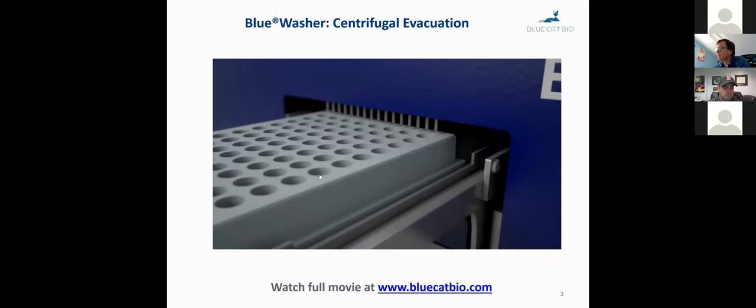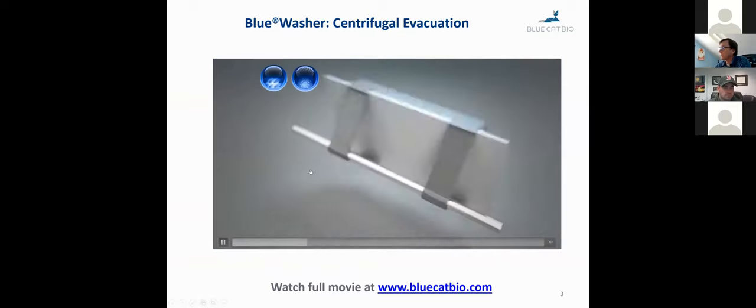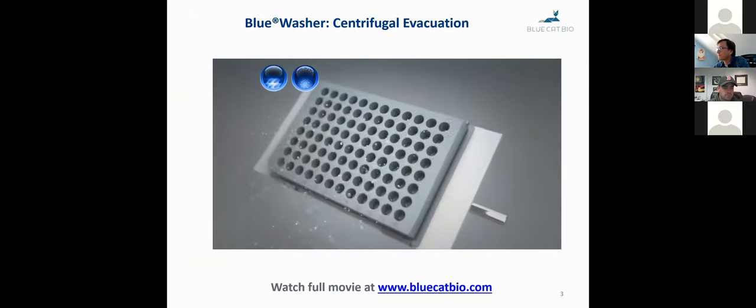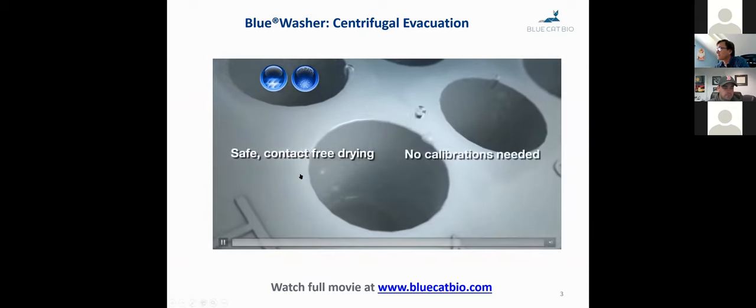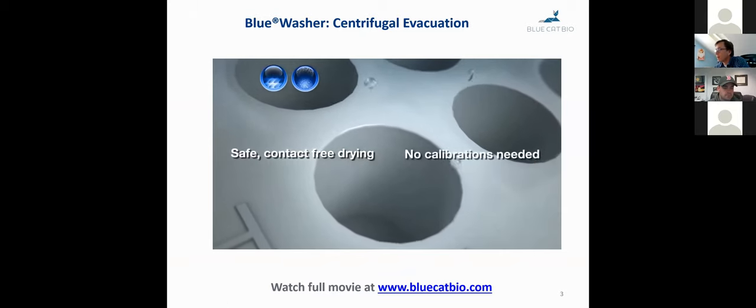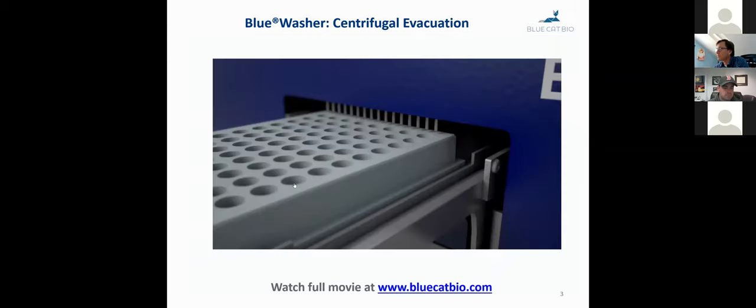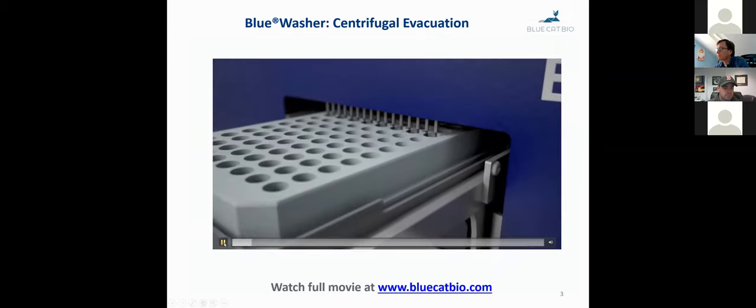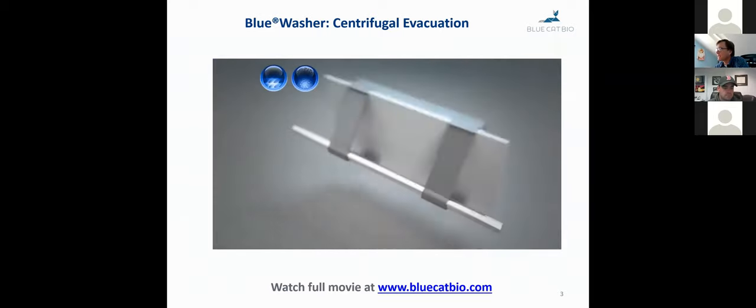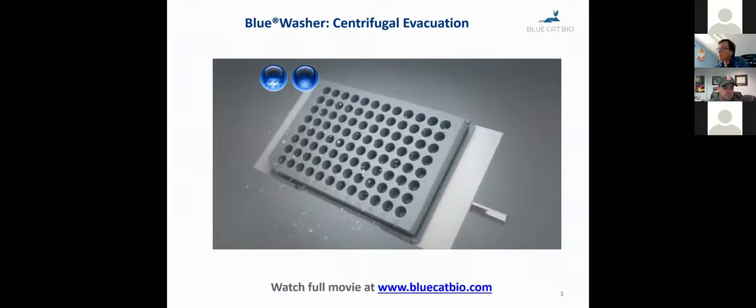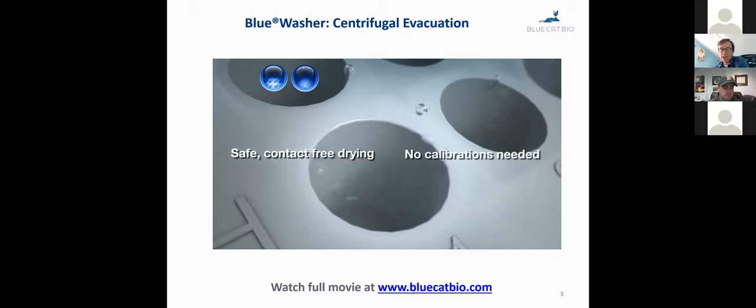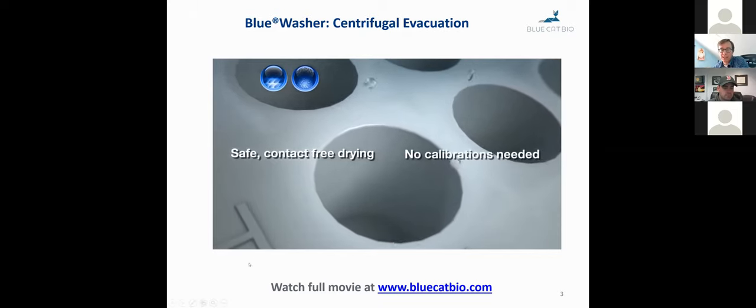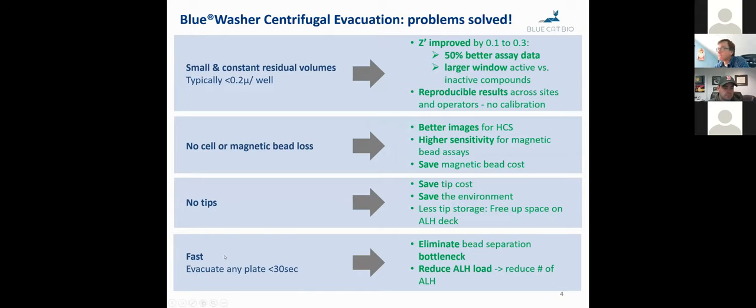So the solution that we have is centrifugal evacuation with a blue washer. I just want to show you this quick movie. So that shows the principle of centrifugal evacuation. I'm just going to run it again. So the blue washer dispenses liquids into the plate, and then inside, the plate spins around a horizontal axis, and the centrifugal force then basically safely pulls the liquid out of the wells with no contamination. And that solves the problem.